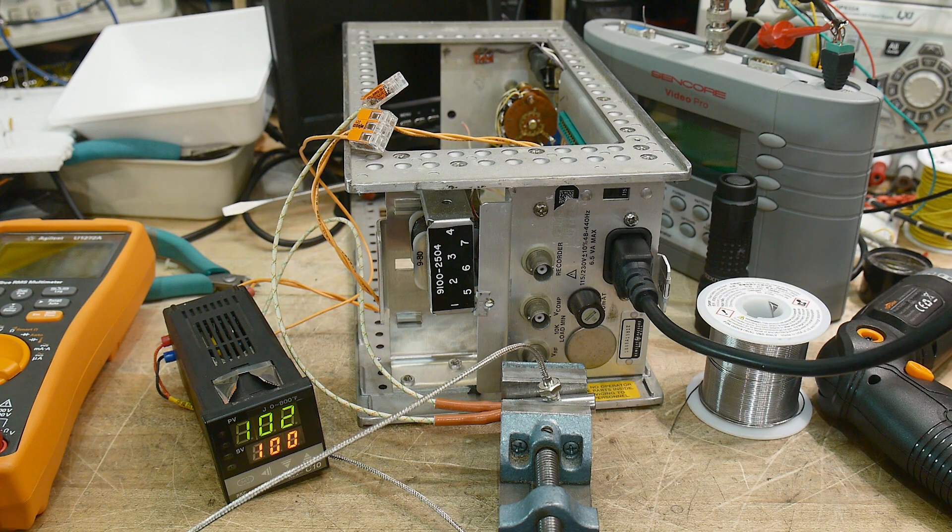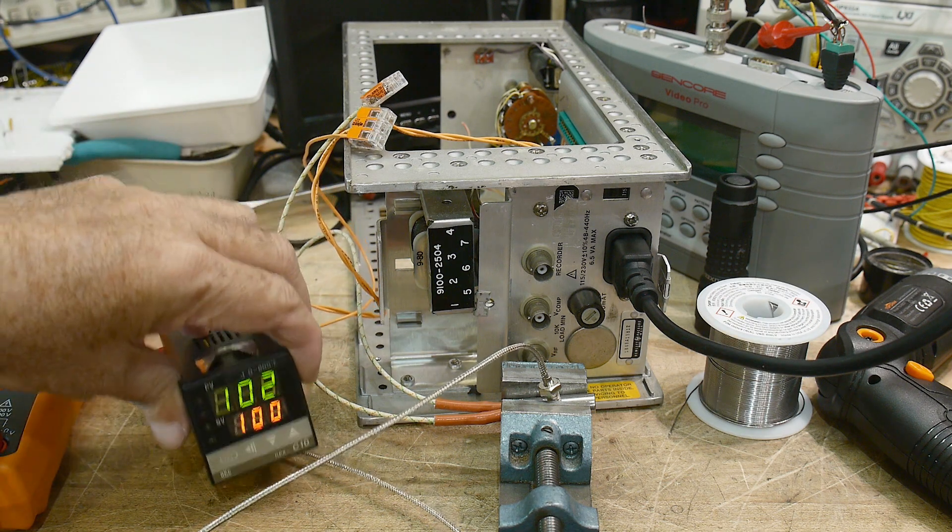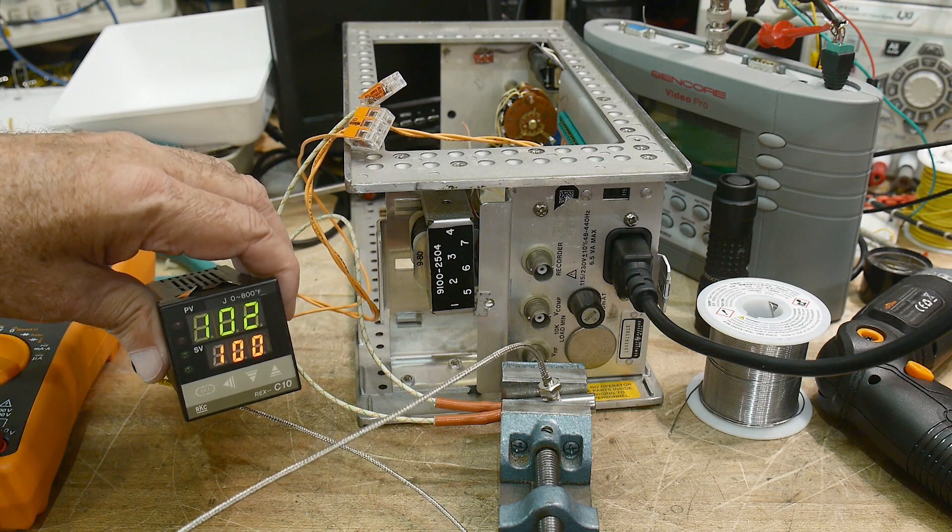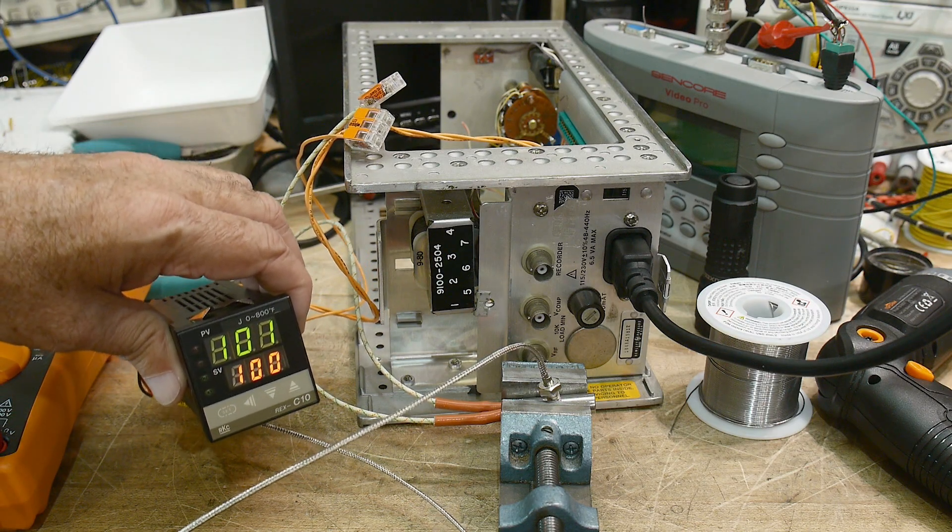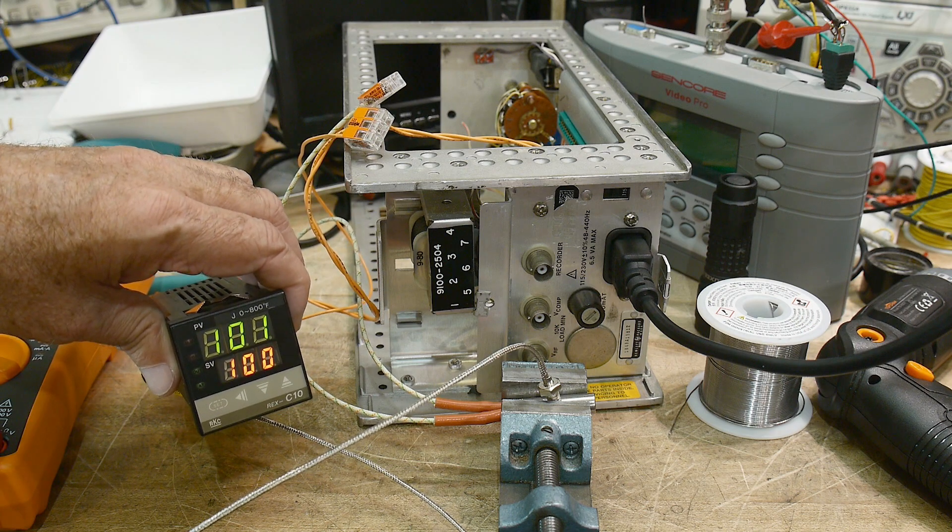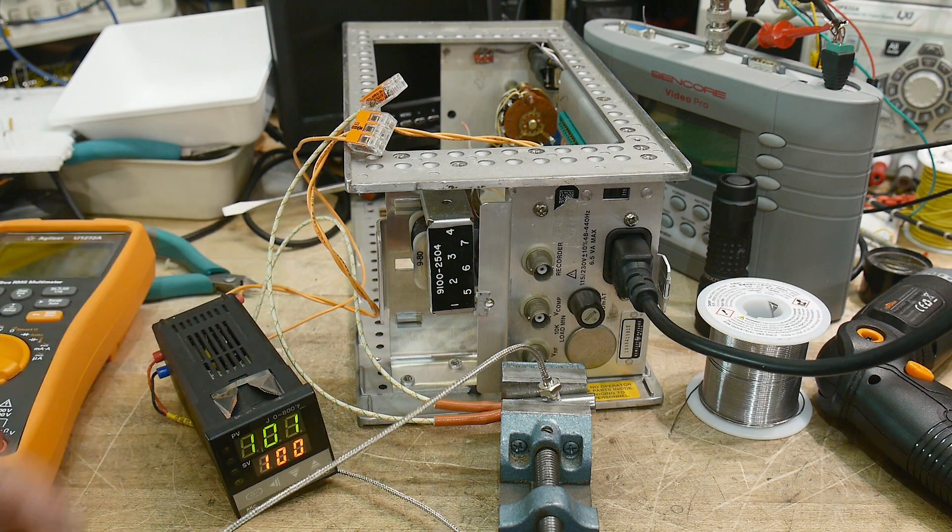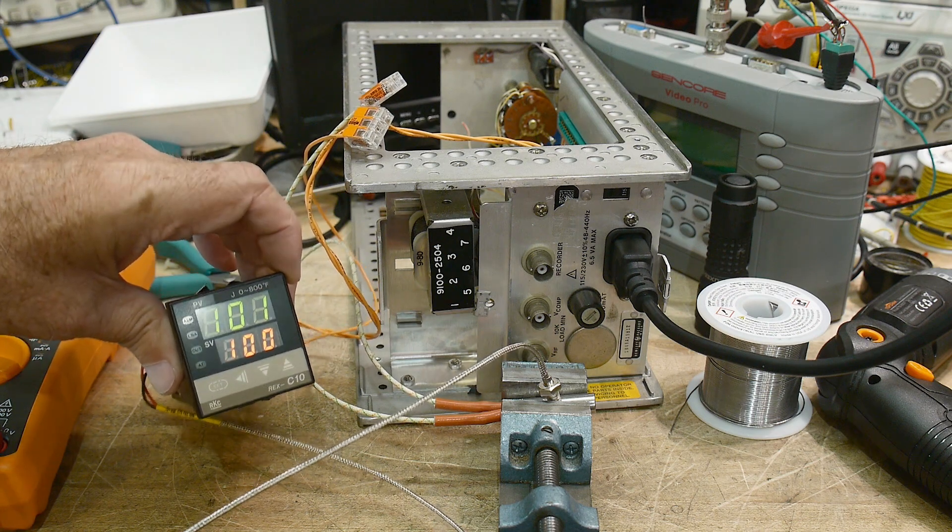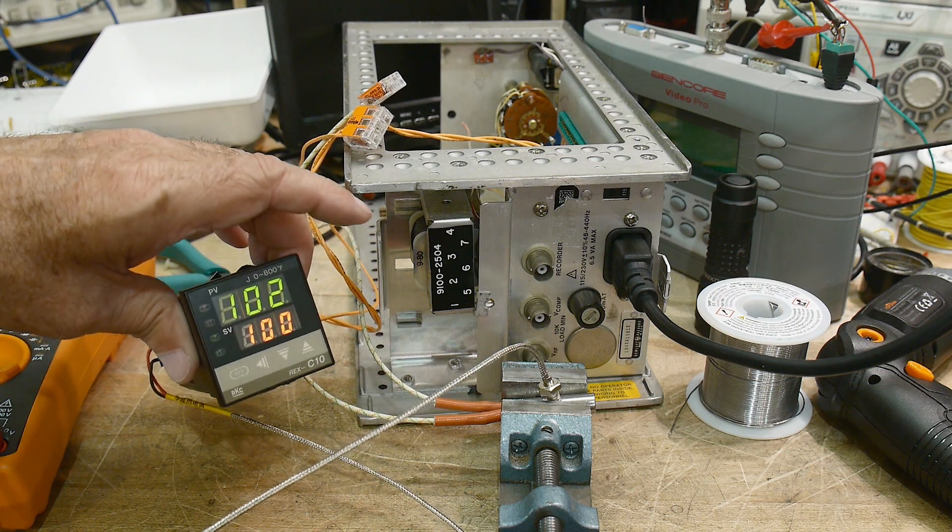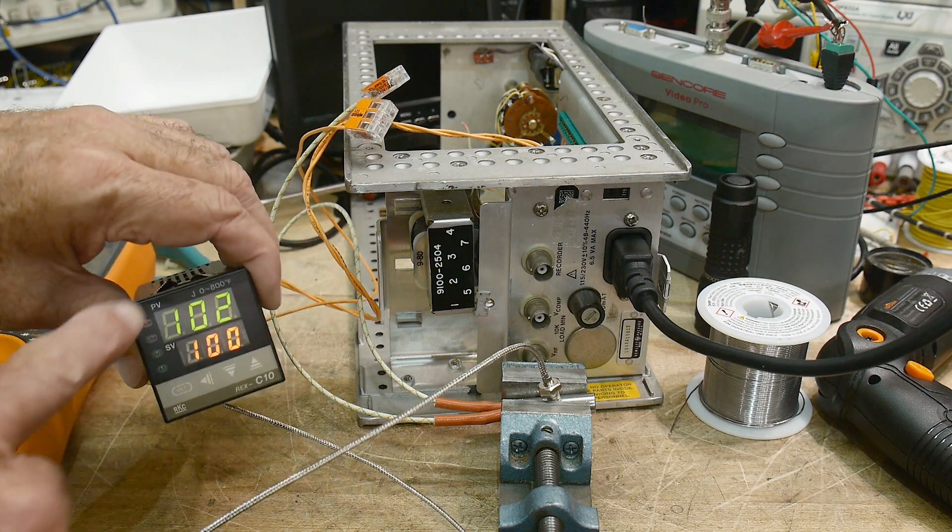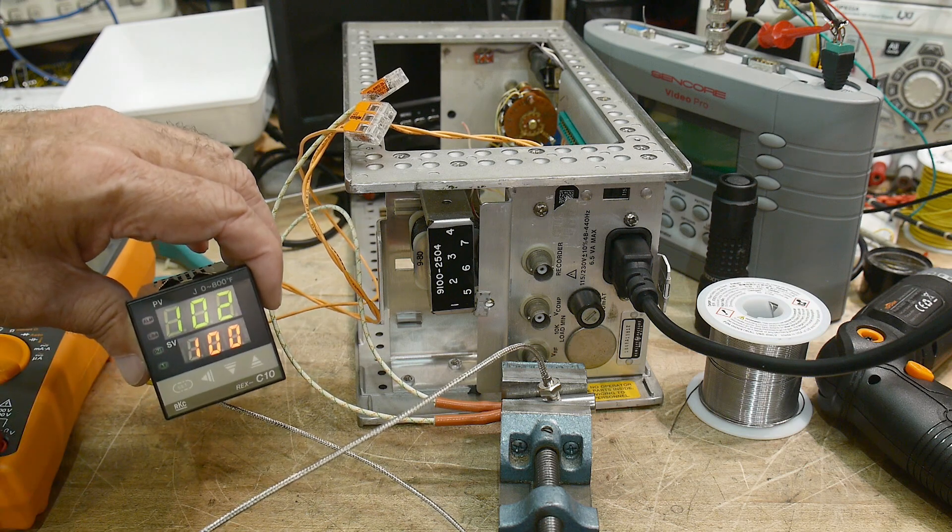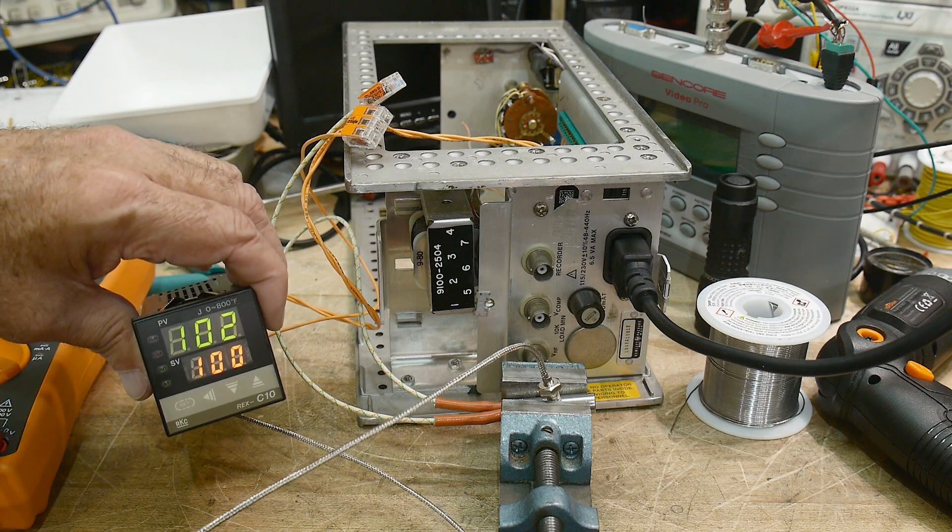And I have a temperature controller that's been sitting on my shelf for a very long time. I don't remember where I got this. I know I didn't pay money for it. It came for free somehow. And so I have it, the green is the current temperature and the bottom is the set temperature. And so I'm currently measuring 102 degrees and I have a set value of 100.